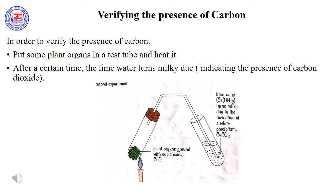Another simple experiment using lime water can be done to test the presence of carbon in plants. In general, when lime water reacts with carbon dioxide, it turns milky and turbid. So, when the leaves of the plant are heated, carbon dioxide is released, which in turn enters the second tube, reacts with lime water, and turns turbid. Thus, carbon is found in plants.